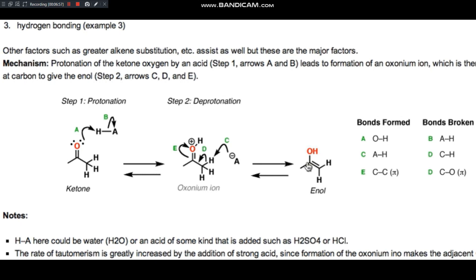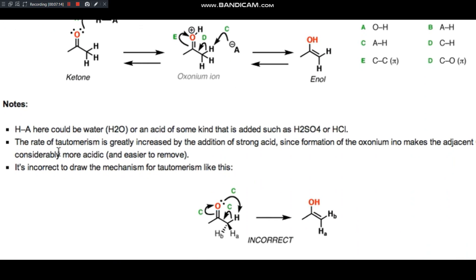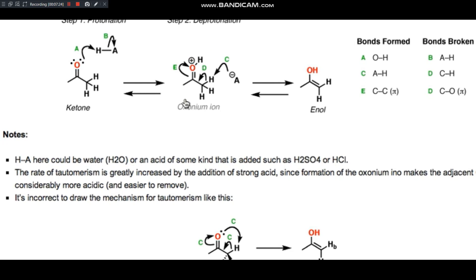And the reverse of this reaction, you would have a double bond attacking HA being protonated and going through here and then deprotonating it back to give the neutral ketone. So it would happen exactly in reverse as it did in the forward case. Okay. So HA here, like I said, would be water or some other kind of acid that's added, such as sulfuric acid or HCl. The rate of this tautomerism is greatly increased as you add strong acid, since you're going to increase the acidity of the alpha carbon when you protonate the oxygen.